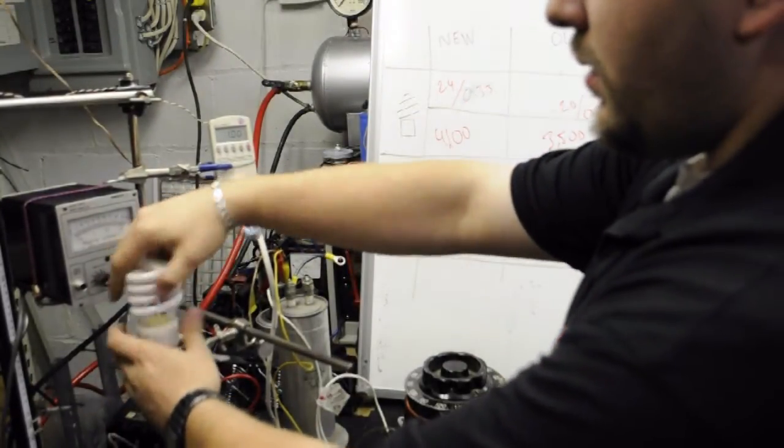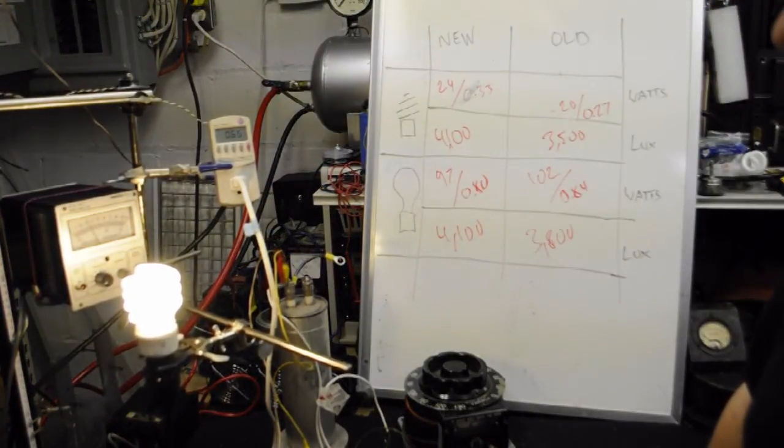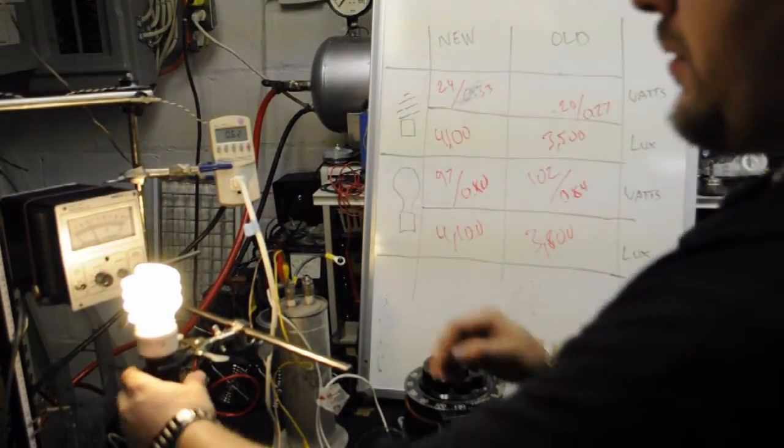And here is the old compact fluorescent. And it looks to be about the same. 0.65, a little bit better. So that really hasn't changed over the years.